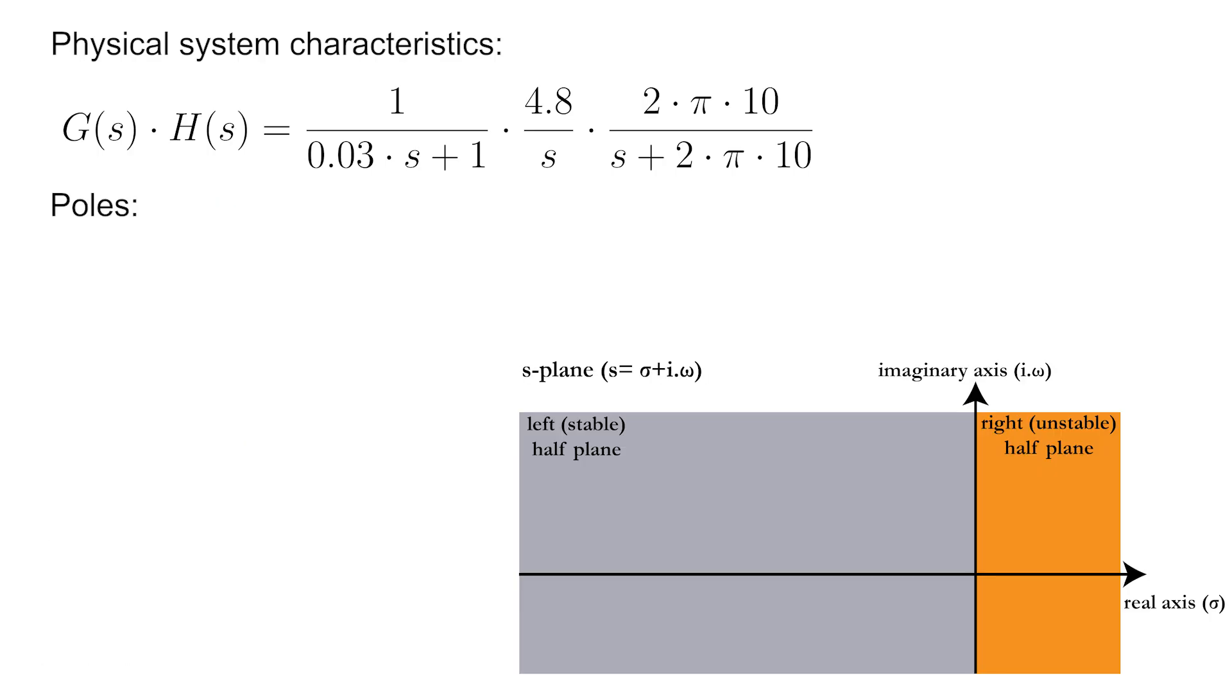Now this open-loop system contains three poles or values of S for which the denominator becomes 0. When S is equal to 0, when S is equal to minus 33, and finally when S is equal to minus 63.